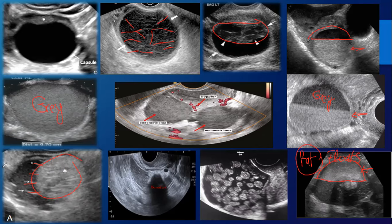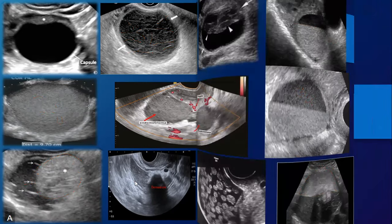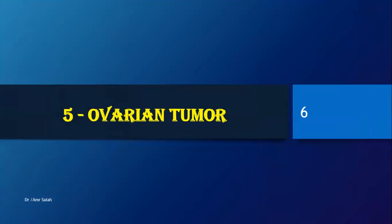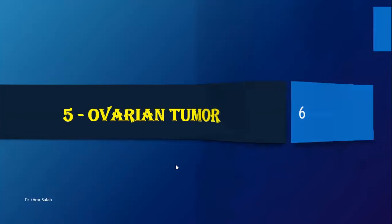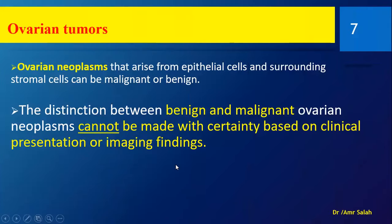Now we will attack the new lecture. We are going to discuss the ovarian tumor. Remember that all the previous lesions had no vascular flow inside — that was all to differentiate them from today's theme: the ovarian tumor, where we will find vascularity inside.